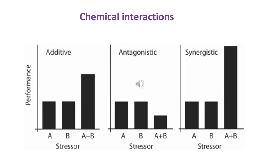Another phenomenon to consider is the chemical interactions of different toxins. If you have toxin A and toxin B in a water source or soil, those two toxins can have an additive effect — A causes a certain amount of effect, B causes a certain amount, and together they sum. Antagonistic effects occur when two environmental toxins both present reduce the overall effect — one toxin kind of fights the other. Synergistic is when both toxins together cause a much greater than additive effect — greater than the effect of both singly.